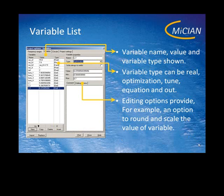The second tab of the project options window is the variable list. It contains a list of variables you can use in the Microwave Wizard. We have different types of variables — for example, real variables, equations and optimized variables.